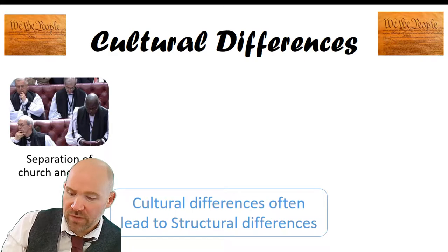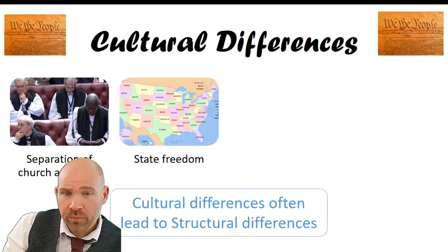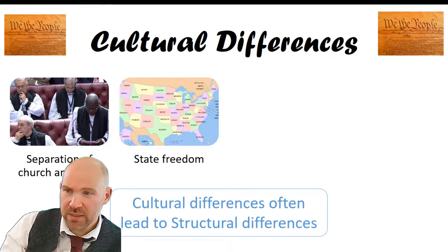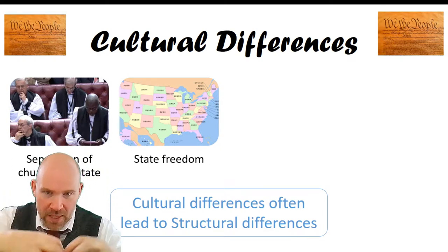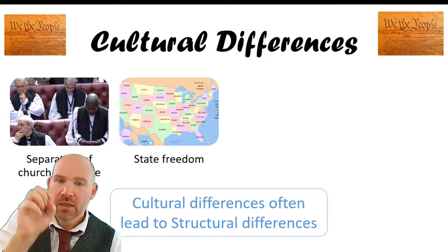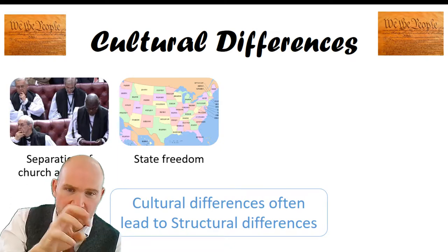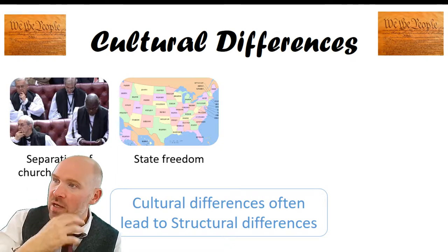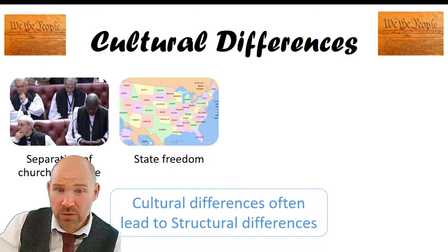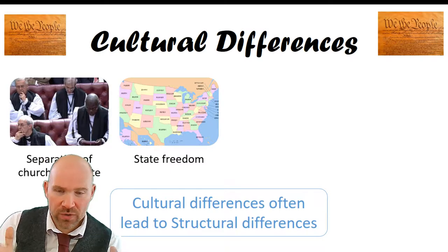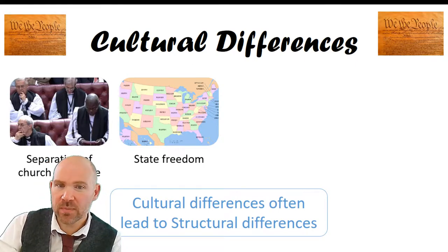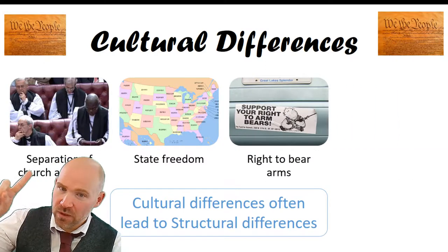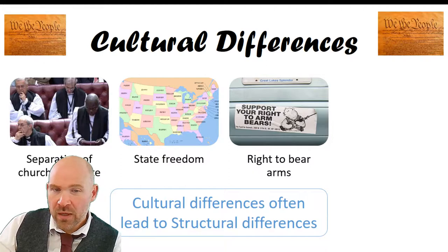States' freedom is another cultural difference. As you're probably aware, America started with a loose confederacy of states loosely bonded together, which didn't quite work, so they went for the United States of America. But you still have Texas, Florida, California, Ohio — separate states with their own governors, their own legislatures, their own traditions and cultures. The constitution reflects that. Federalism is built in structurally because of the cultural belief in states' freedom.